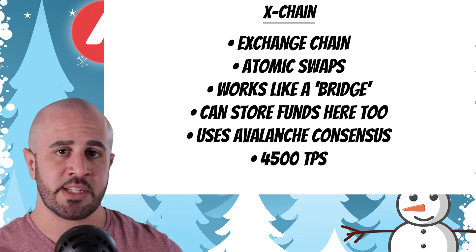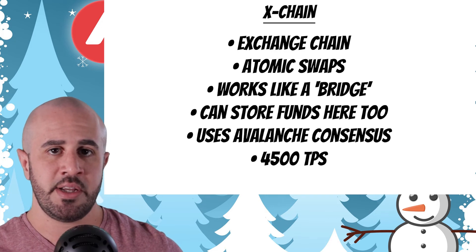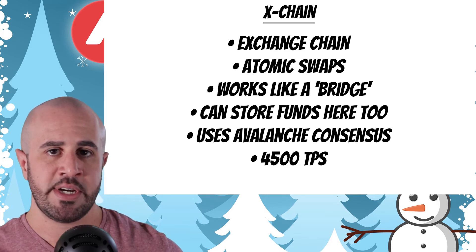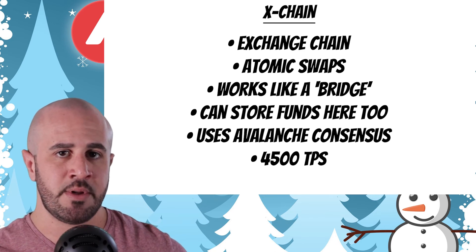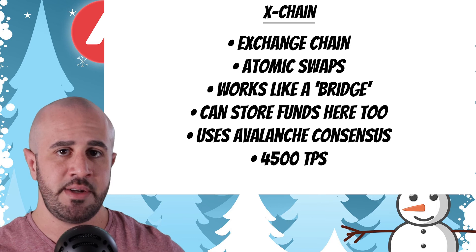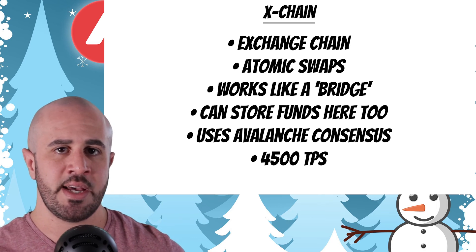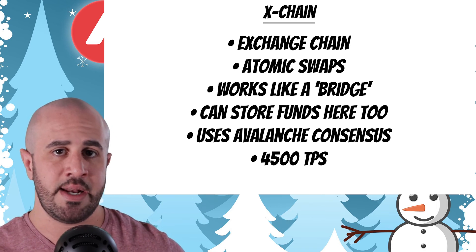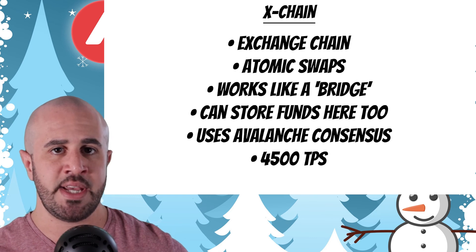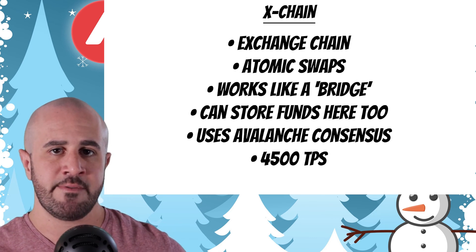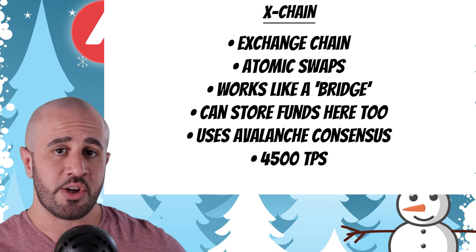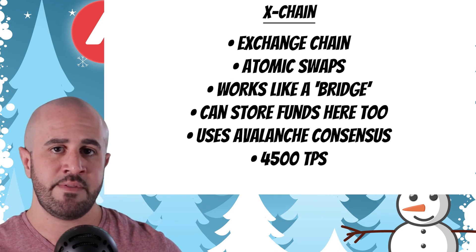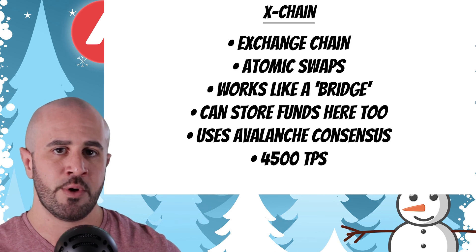Finally, we have the X chain, which is used for what's called atomic swaps. This is the chain you use if you want to transfer assets across the other chains — for example, moving funds from the P chain over to the C chain. It works similarly to a bridge, except you can also keep funds on the X chain itself. According to Avalanche, live testing shows the X chain can handle up to 4,500 transactions per second.